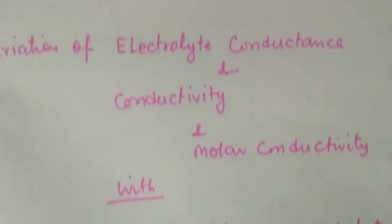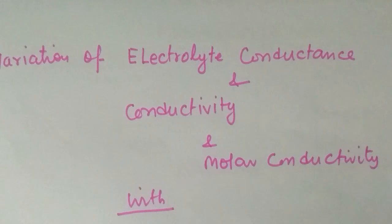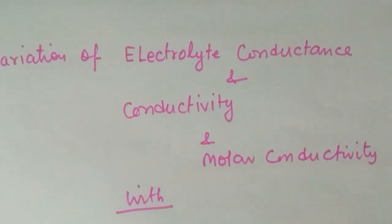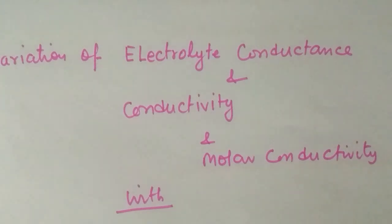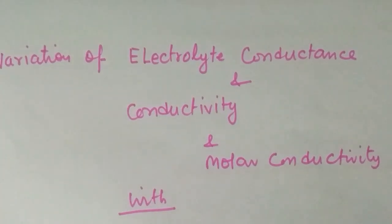We know that for electricity to conduct in an electrochemical cell, there is one electrolyte which contains cations and anions — charged particles which flow from one end to the other. This flow of charged particles is electricity, and the electricity passes through the electrochemical cell.